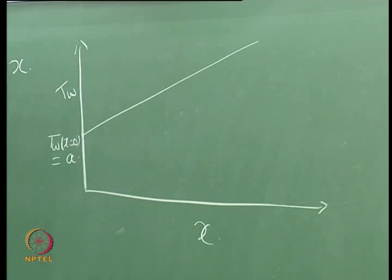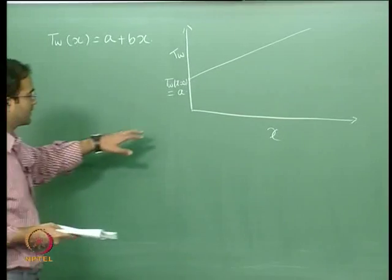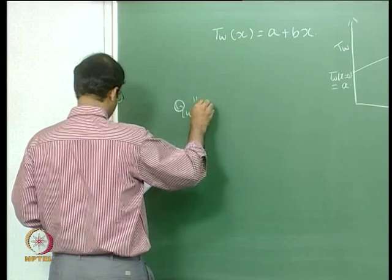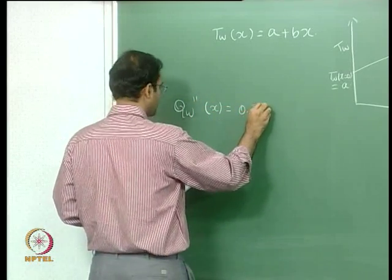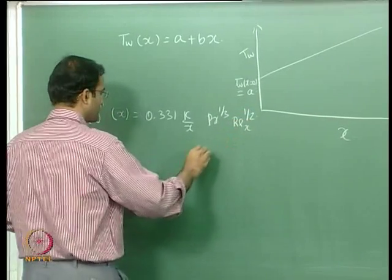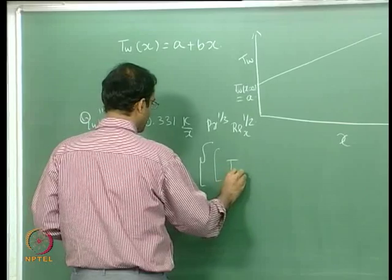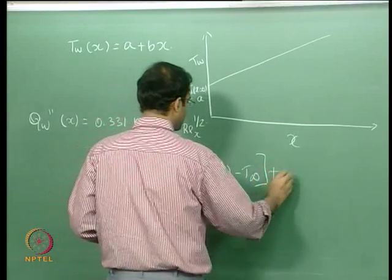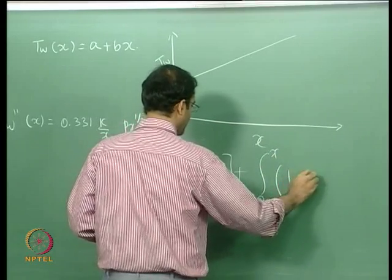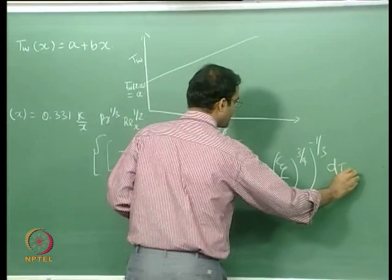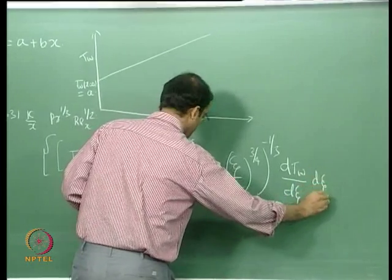Going back to what we derived yesterday with the Duhamel superposition integral for a continuous variation of wall temperature, the expression for wall heat flux is: 0.331 × (k/x) × PR^(1/3) × [T_wall(ζ=0) − T∞ + integral from 0 to x of (1 − ζ/x)^(3/4)^(−1/3) × (dT_wall/dζ) dζ].